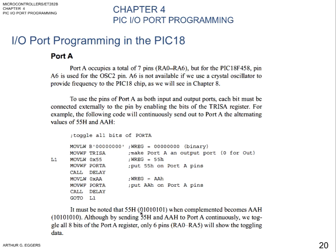It must be noted that 55H in binary is 01010101, and when complemented it becomes AAH, which is 10101010 — how convenient. By sending 55H and AAH to port A continuously, we toggle all bits of the port A register. Only pins RA0 to RA5 will show the toggling data. If you set up the watch window correctly in MPLAB, you'll be able to see tri-state A and port A changing states as 55H or AAH and verify that what you programmed is in fact happening.